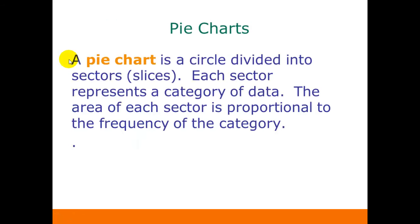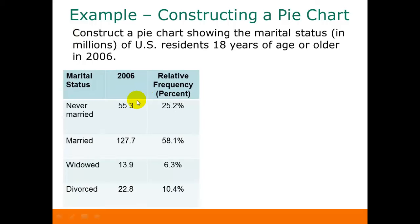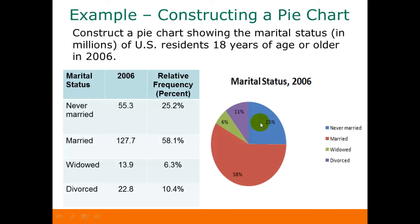A pie chart is a circle divided into sectors or slices. Each sector represents a different category of the data, and the area of each sector is proportional to the frequency of the category. Here's an example of constructing a pie chart going back to our data about marital status for U.S. residents. For pie charts, we need relative frequencies because we need to know the proportions to figure out how big to make our different slices. We're just doing this for 2006, so here are the relative frequencies for 2006, and our pie chart gives the percentages for each category.